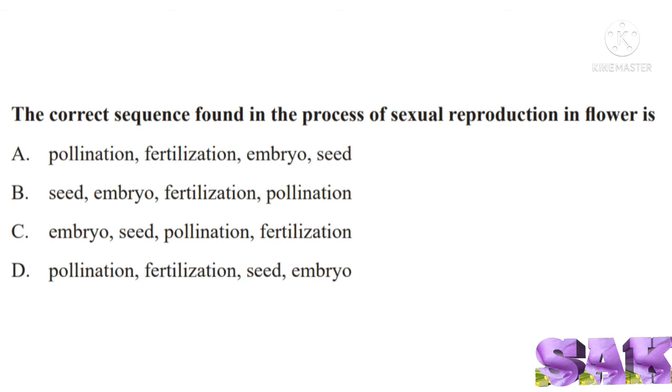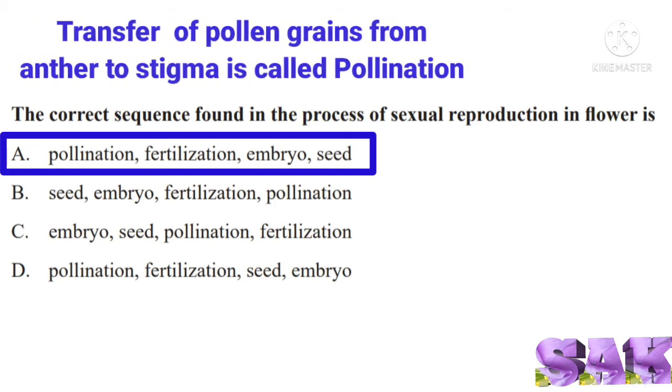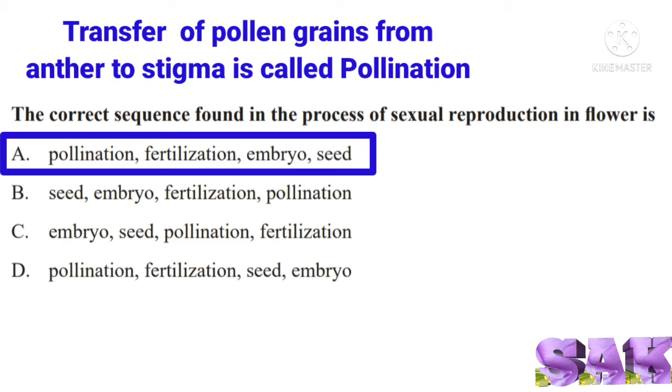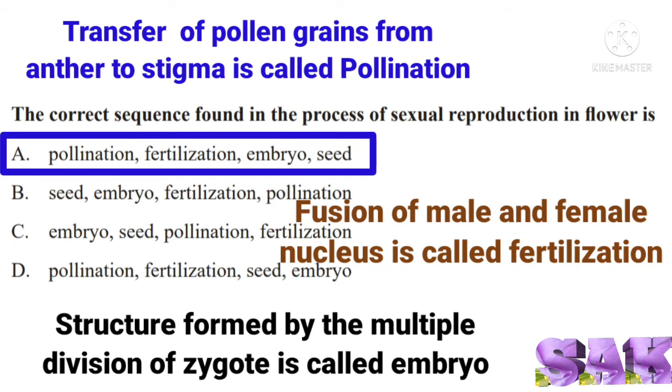Next question: the correct sequence found in the process of sexual reproduction in flower. Correct answer is option A: pollination, fertilization, embryo, seed. Pollination means transfer of pollen grains from anther to stigma. Fusion of male and female nucleus is called fertilization. Structure formed by the multiple division of zygote is called embryo.